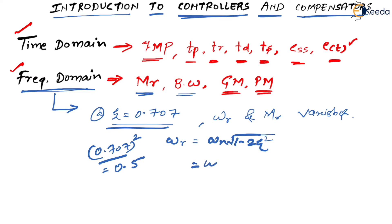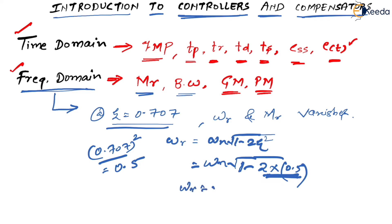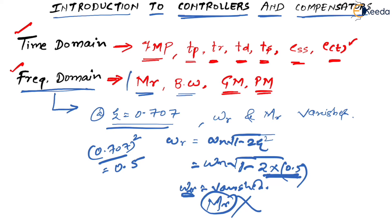If you put Zeta squared equal to 0.5 into the formula: omega_n into under root of 1 minus 2 times 0.5, that gives 1 minus 1, which equals 0. So omega_r vanishes. And if omega_r has vanished, there is no point having a magnitude at that resonant frequency — that is, MR also vanishes. So we understand that we cannot completely rely on MR and bandwidth.